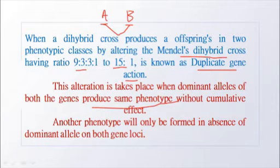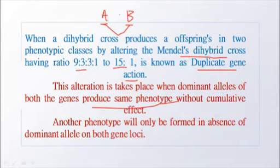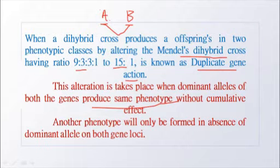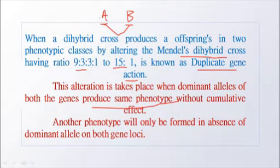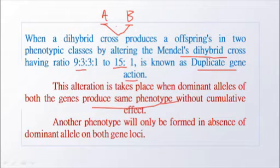This alteration takes place when dominant alleles of both genes produce the same phenotype without any cumulative effect. If only dominant A is present it will produce the same phenotype; if only dominant B is present it will produce a similar phenotype; and when both dominant alleles are present they also produce a similar phenotype. Only when both dominant alleles of both genes are absent will they produce another type of phenotype.